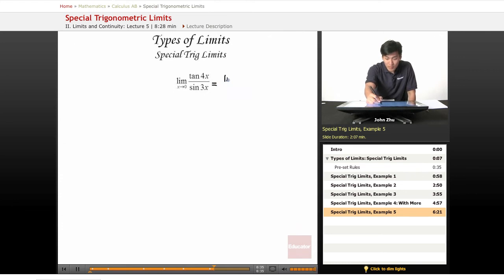So right away, let's do limit as x goes to 0, sine of 4x over cosine of 4x all over sine of 3x.